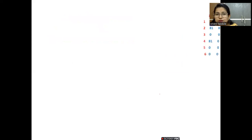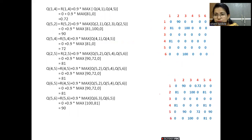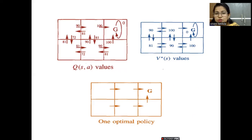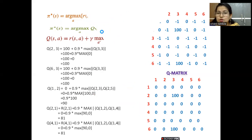Similarly, all other values can be found, and I have listed them out — you can work on this on your own. The final updated Q-table is given for your reference. Based on this final Q-table, we formulate the optimal policy. Initially all Q values were zero; now the agent has updated all its values. The optimal policy is π*(s) = argmax_a Q(s, a), so wherever the Q-values are maximum, we pick that action.